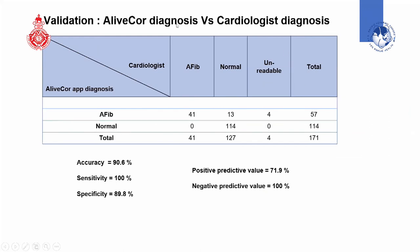For the second objective — validating the device against a cardiologist's diagnosis — among the 57 AF cases and double the number of normal tracings reviewed, the iLifeCo app showed an accuracy of 90.6% in diagnosing possible AFib. Sensitivity was 100%, specificity was 89.8%, positive predictive value was 71.9%, and negative predictive value was 100%. This indicates the tool is very good at ruling out AFib in the community, though it is not a definitive diagnostic test but helps with referral for further review.